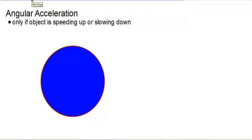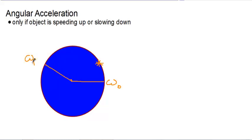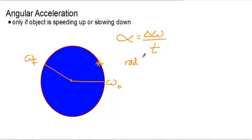All objects traveling in a circular path experience centripetal acceleration. But if an object like a car going around a track is also speeding up or slowing down, it has angular acceleration relative to the center as well. If the object's angular speed is changing, we define angular acceleration alpha as delta omega divided by time. The most common unit is radians per second squared, though it could be any angular unit over time squared.